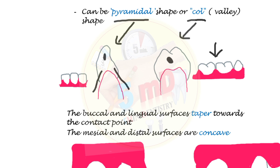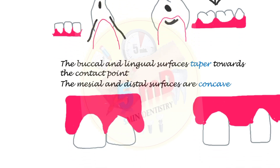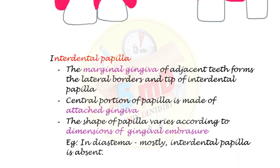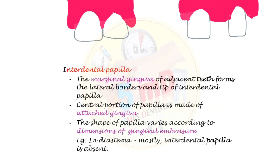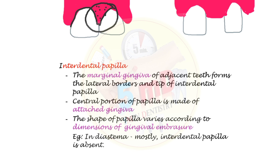The mesial and distal surfaces are concave, forming a valley. The triangle-shaped interdental papilla, a component of the interdental gingiva, has its derivatives from both the marginal gingiva and the attached gingiva. The lateral walls and the tip of the papilla are derived from the marginal gingiva of the adjacent teeth, whereas the central portion of the papilla consists of the attached gingiva.